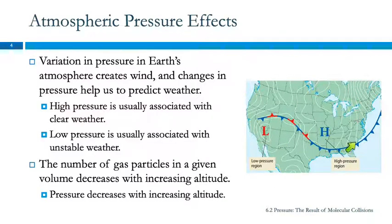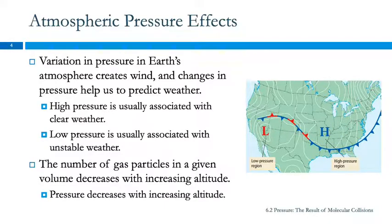High pressure — elevated atmospheric pressure — is usually associated with clear weather, and low pressure is usually associated with unstable weather. It's these differences in pressure in different parts of the Earth that cause a lot of our weather and wind.